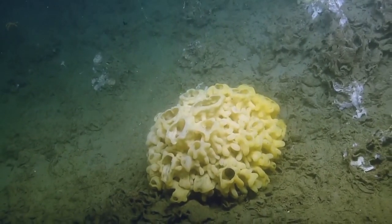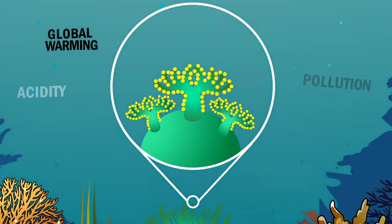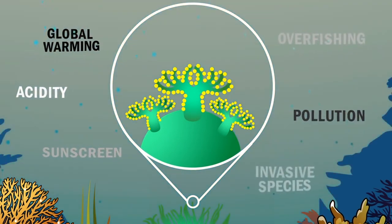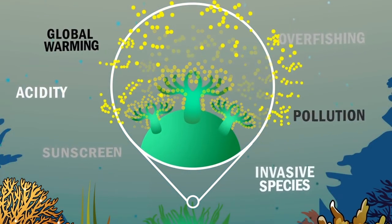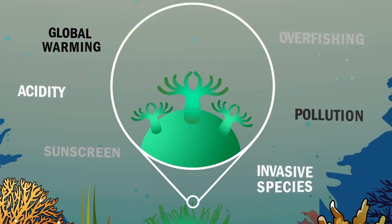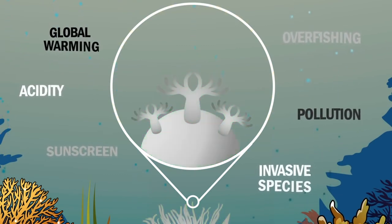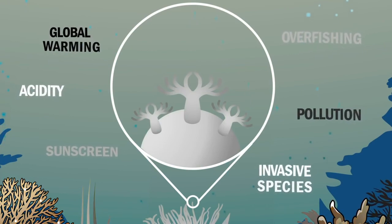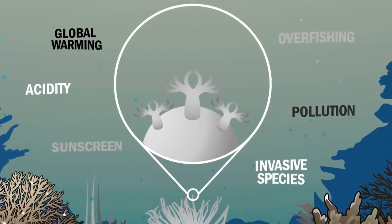Healthy coral have a symbiotic relationship with the microscopic algae that live in their tissues. These algae are their primary food source and give them their color. But changes in ocean temperature are causing algae to leave the coral's tissue, and the loss of its major food source is resulting in bleached coral that is more susceptible to disease.